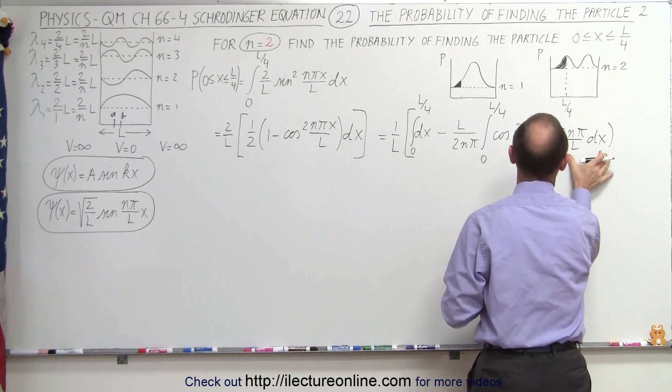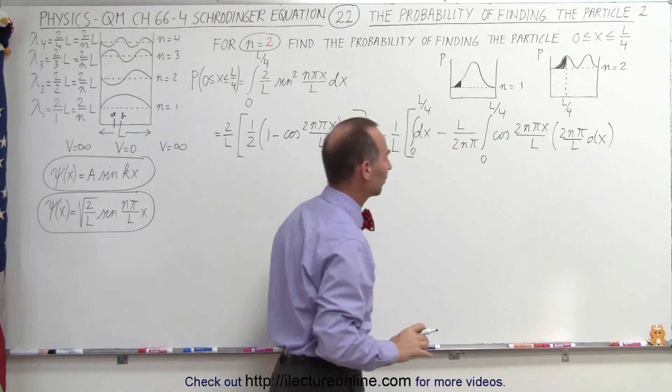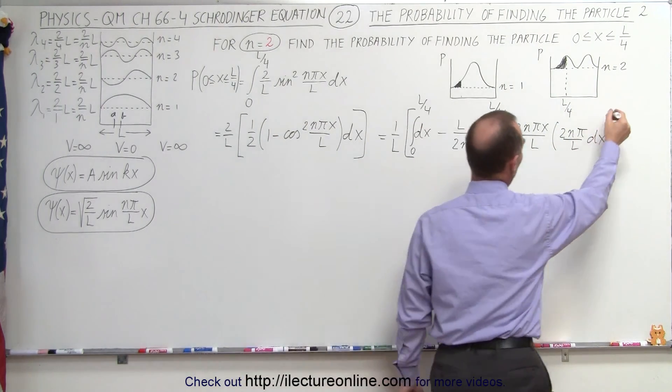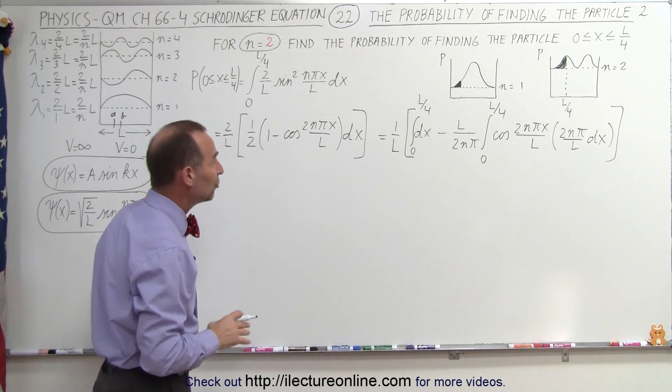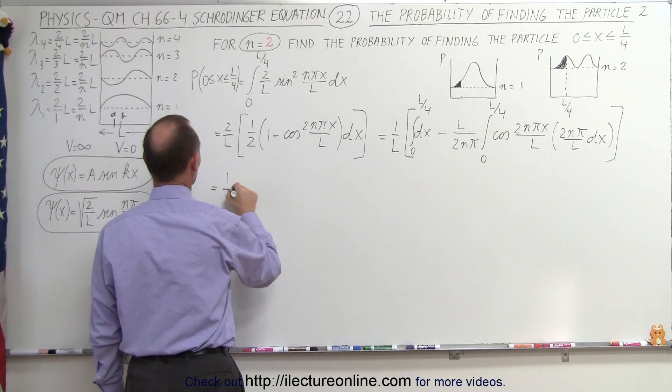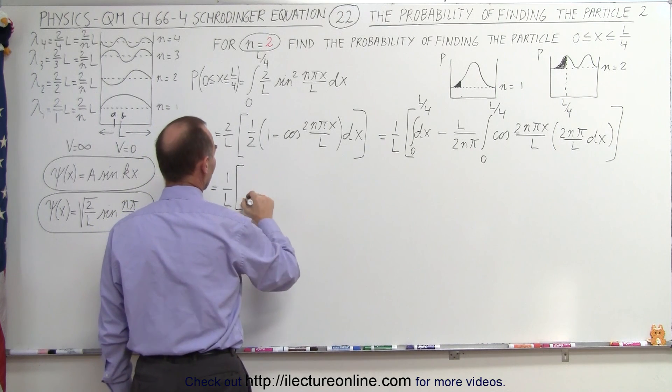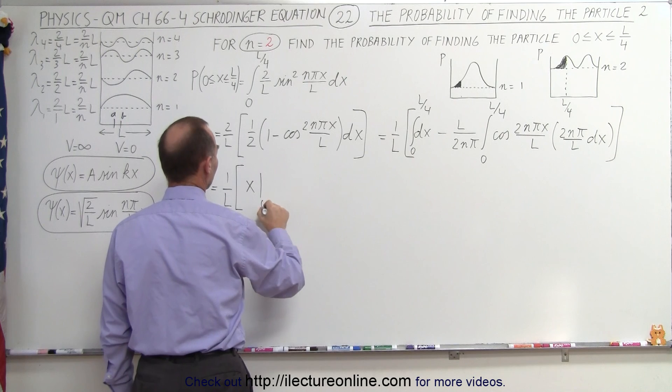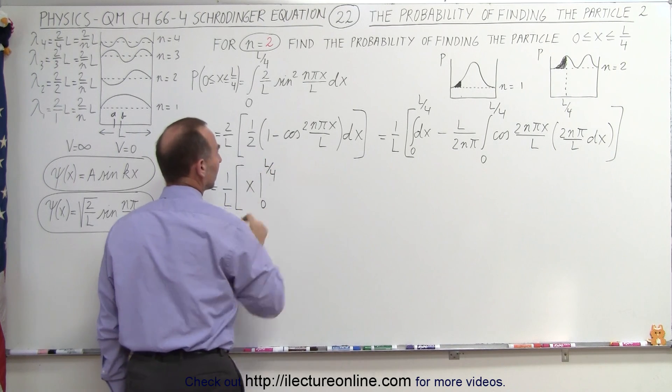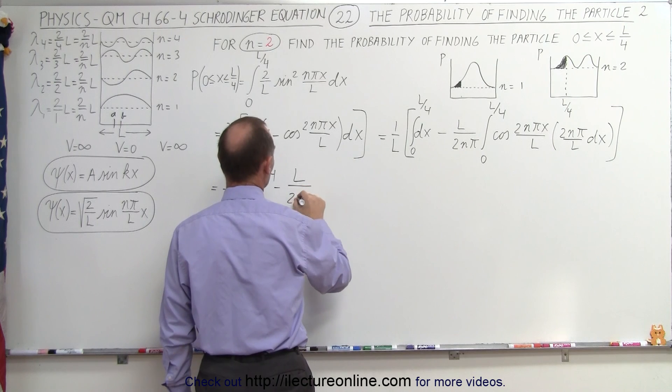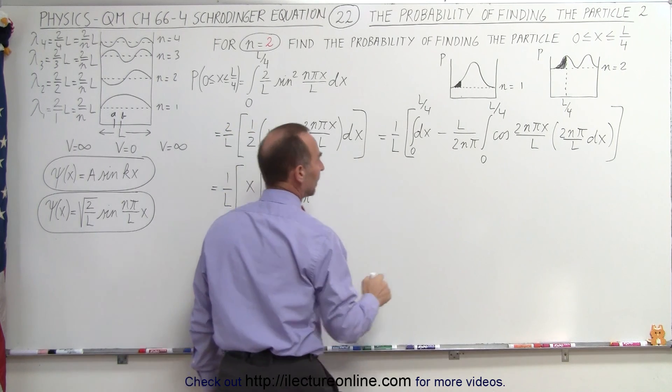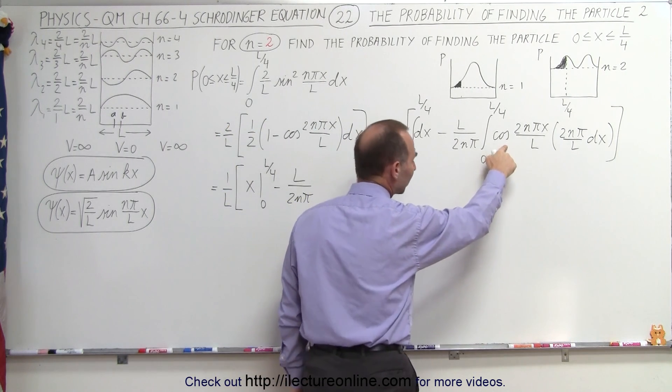Of course, you might as well close the brackets. All right, so now we can go ahead and do both integrals. So this is equal to 1 over L times we have x evaluated from 0 to L over 4, and then minus L divided by 2n pi.